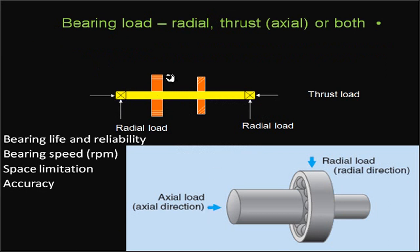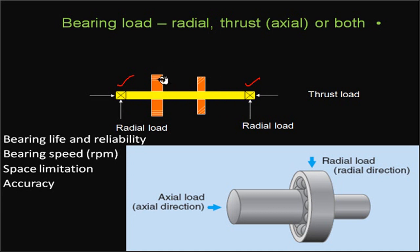Consider a spur gear or helical gear mounted on a shaft that is supported by two bearings. The axial force reaction in the system is referred to as the thrust load, and the perpendicular force is referred to as the radial load.